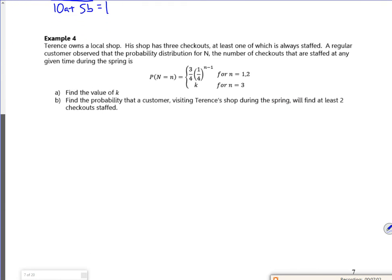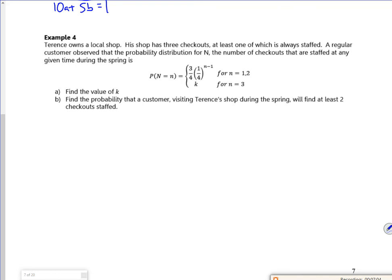So Terence owns a local shop. The shop has three checkouts, at least one of which is always staffed. Regular customers observed the probability distribution for the number of checkouts. I've got a certain way of working out probabilities for 1 and 2, and then another way for 3.